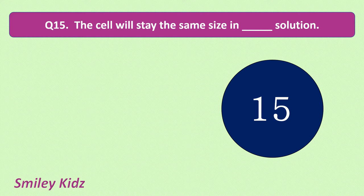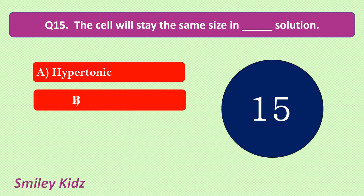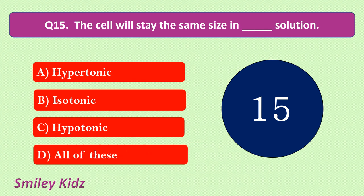Question number 15 — and this is the last question of this quiz. The cell will stay the same size in dash solution. Your options are: hypertonic, isotonic, hypotonic, all of these. Your time starts now.